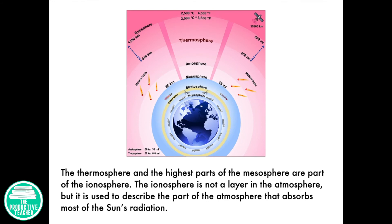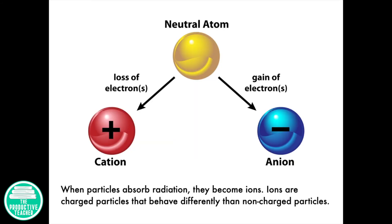The thermosphere and the highest parts of the mesosphere are part of the ionosphere. The ionosphere is not a layer in the atmosphere, but it's used to describe the part of the atmosphere that absorbs most of the sun's radiation. When particles absorb radiation, they become ions. Ions are charged particles that behave differently than non-charged particles.